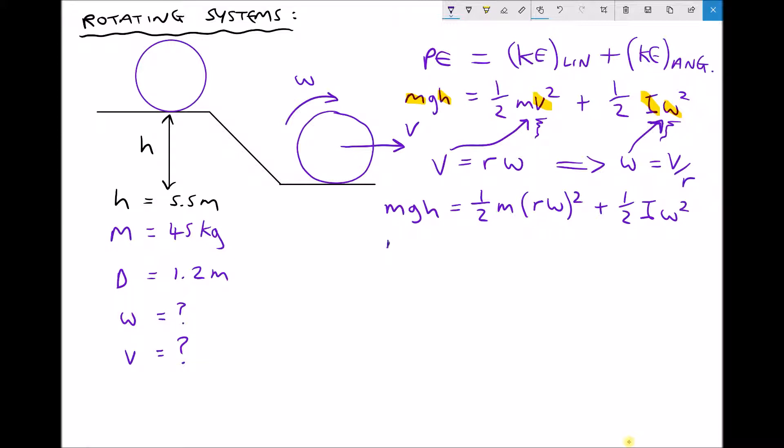I'm going to rewrite this slightly. mgh equals a half m - now in order to remove that bracket, I need to square the r and square the omega, so r squared omega squared plus a half i omega squared. There's a number of different ways we could manipulate this formula, but recall that the thing we're trying to find is omega. So I'm going to add a couple of brackets and collect like terms. We have a half m r squared in a bracket - we know m and r, so that bracket is just going to be a number. A half i is also just a number.